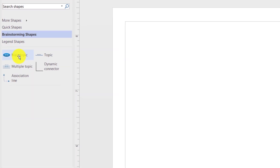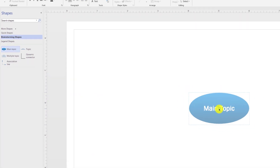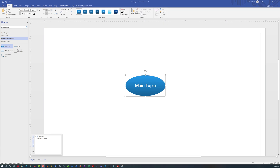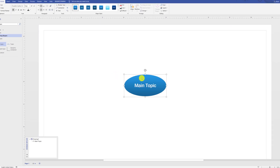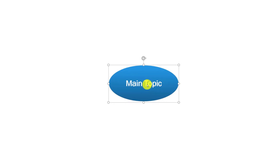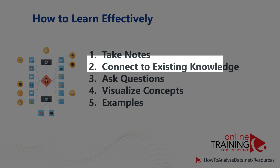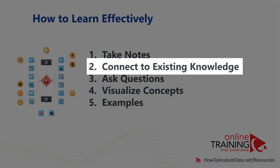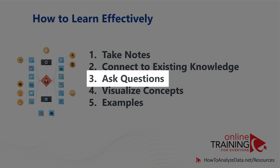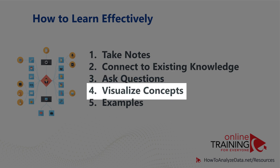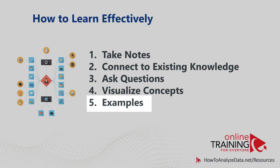To start building the diagram, you need to start with the main topic. Let's say that my main topic I'm trying to brainstorm is how to learn effectively. To capture it in the main topic bubble, I need to double-click on the bubble and type in the name. Let's assume that there are five main concepts we're trying to adapt for effective learning: taking notes, connecting new concepts to existing knowledge, asking questions if something is not clear, and visualizing concepts.